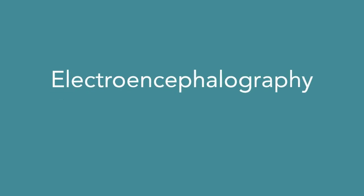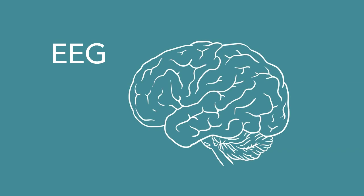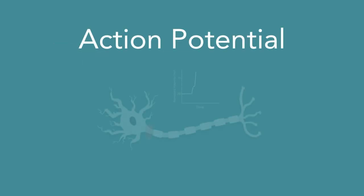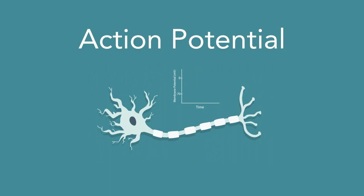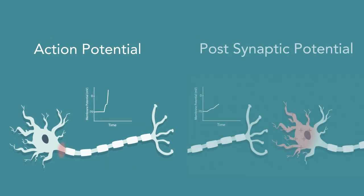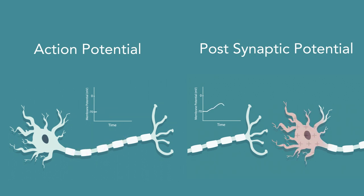The goal of electroencephalography, EEG, is to measure the activity of the brain. However, it can be confusing to figure out what exactly EEG is measuring. Action potentials are the building blocks for electrical signaling in the brain. However, they are not what EEG actually records. Instead, the longer, slower postsynaptic potentials are better able to be picked up by the sensors. In this video, we will explain action potentials and postsynaptic potentials from an electrophysiological perspective and point out important differences between the two.